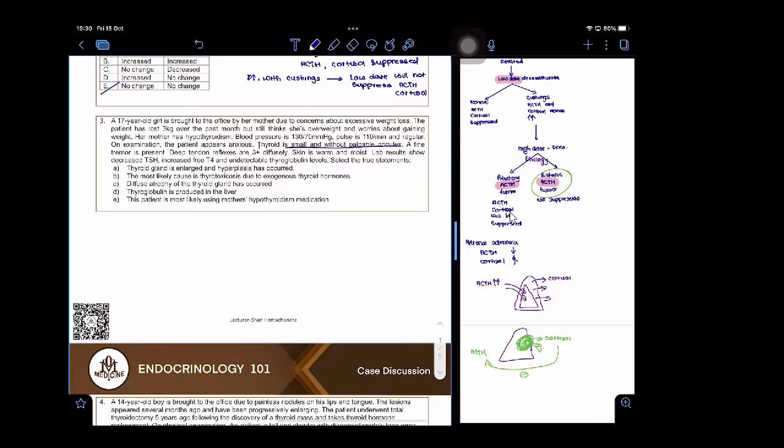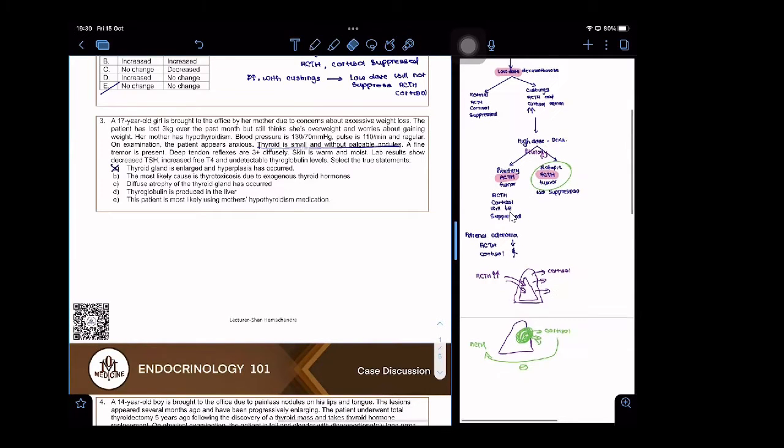You usually skim the question and you miss certain points. Thyroid is small and without palpable nodules. Option A says thyroid gland is enlarged and hyperplasia has occurred. Be very careful because the biggest problem, even I face, is I skip over things.